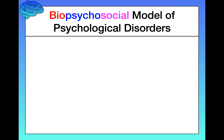Let's start by discussing the biopsychosocial model of psychological disorders. This is a big word, but I've split it up into its three components: the bio, the psycho, and the social. This model proposes that biological, psychological, and social types of factors contribute to the development and perpetuation of psychological disorders.